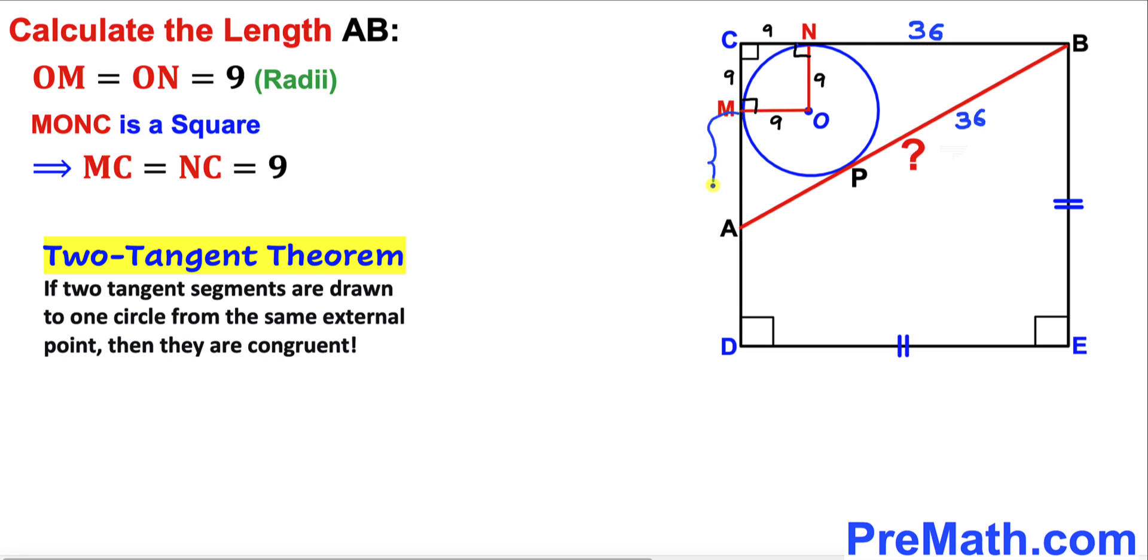Here's our next step. Let's focus on this line segment MA and call this side x. According to the two-tangent theorem, this tangent and this tangent are congruent. If this is x, this has to be x as well.